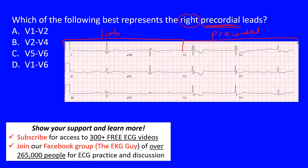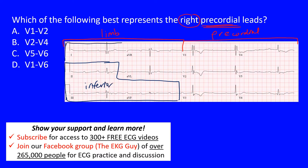To review: our inferior leads are leads II, III, and AVF. Then we have the lateral limb leads — lead I is a lateral limb lead, and AVL is also lateral. AVL may also be considered a high lateral lead. When we look at the limb leads, we're looking at the frontal plane.